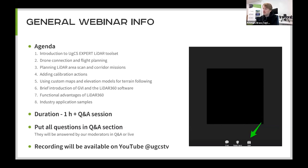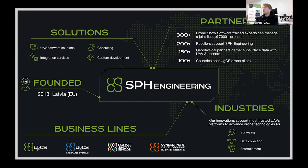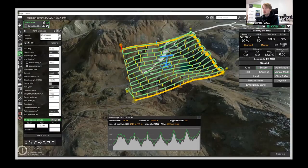Just briefly about us: we are SPH Engineering, based in Riga, Latvia in the EU. We have four main business lines: UGCS, UGCS integrated systems, drone shows, and custom consulting and development. We work across many industries, but specifically with UGCS the main industry is surveying, and we also have a lot of customers working in construction and specifically with LiDAR sensors.